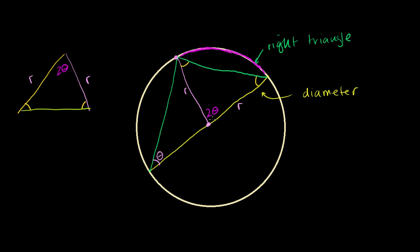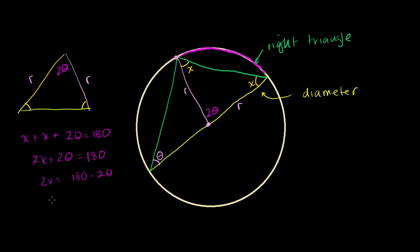I already used theta, so maybe I'll use x for these angles. So this has to be x and that has to be x. What is x going to be equal to? Well, x plus x plus 2 theta have to equal 180 degrees — they're all in the same triangle. So we get 2x plus 2 theta equals 180 degrees, which gives 2x equals 180 minus 2 theta. Dividing both sides by 2, x equals 90 minus theta.